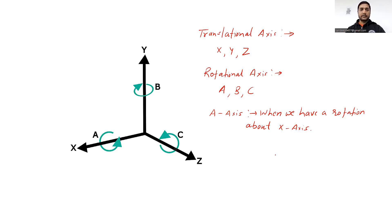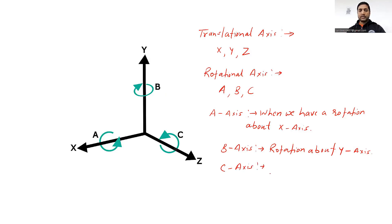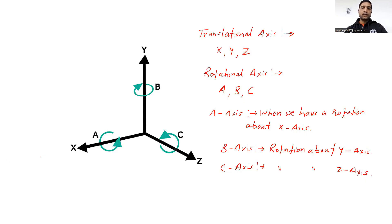That axis is called A-axis. When we have a rotation about the Y-axis, then that axis is termed as B-axis. Similarly, C-axis is defined when we have a rotation about the Z-axis — that axis is termed as C-axis. So in our CNC system, we have three translational axes X, Y, Z for linear motion, and when we have rotation about X, Y, or Z, those axes are termed as A, B, and C respectively.